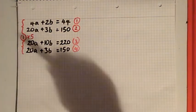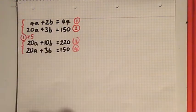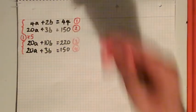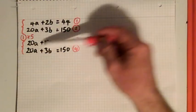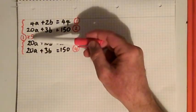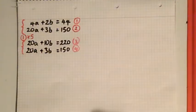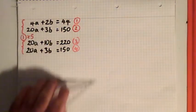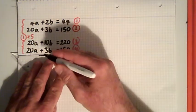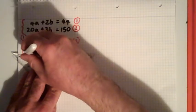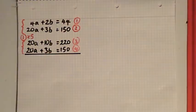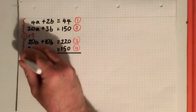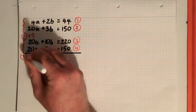And the reason I did that was to get the same amount of a in both equations. So I spotted that 4 goes into 20 by multiplying by 5, so I multiply everything in the first equation by 5. The point of that was to achieve the same amount of a in both equations.